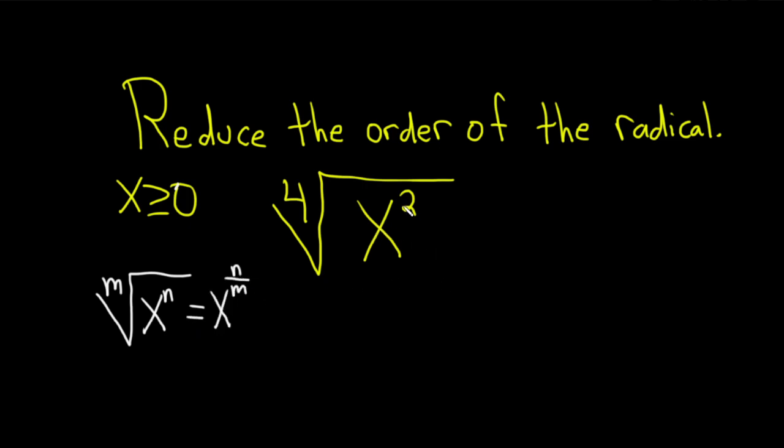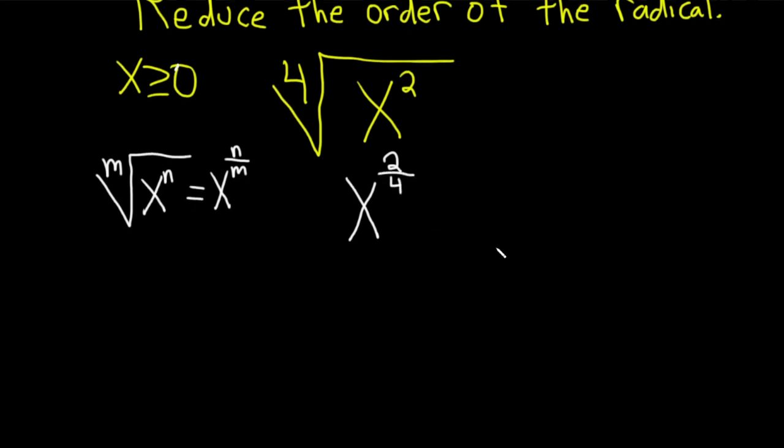So in this case, it's 2 over 4. See how it's n over m? This is the same thing as x to the 2 over 4. But 2 over 4 is the same as 1 half.